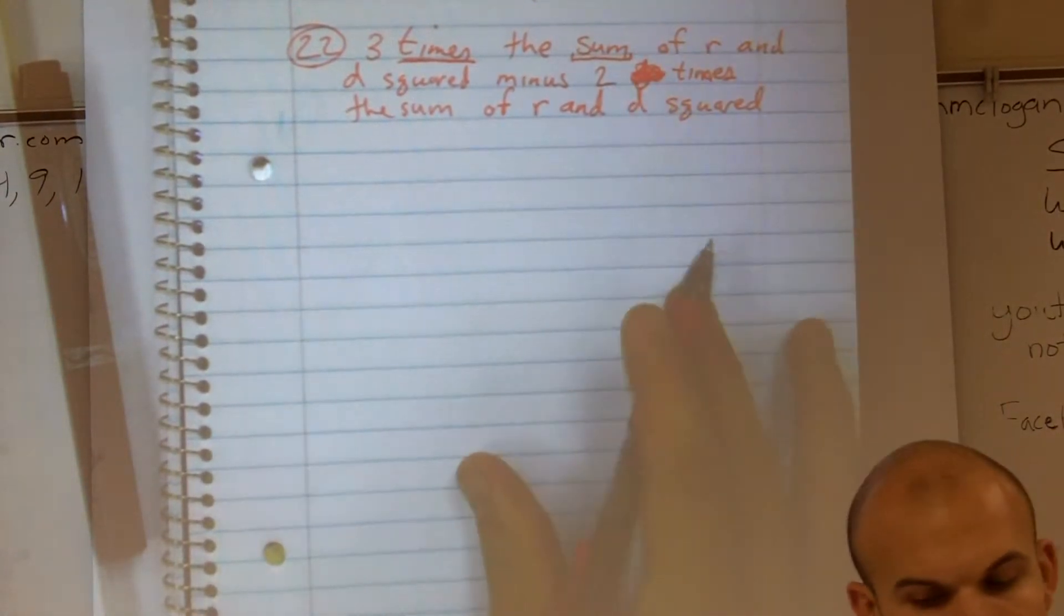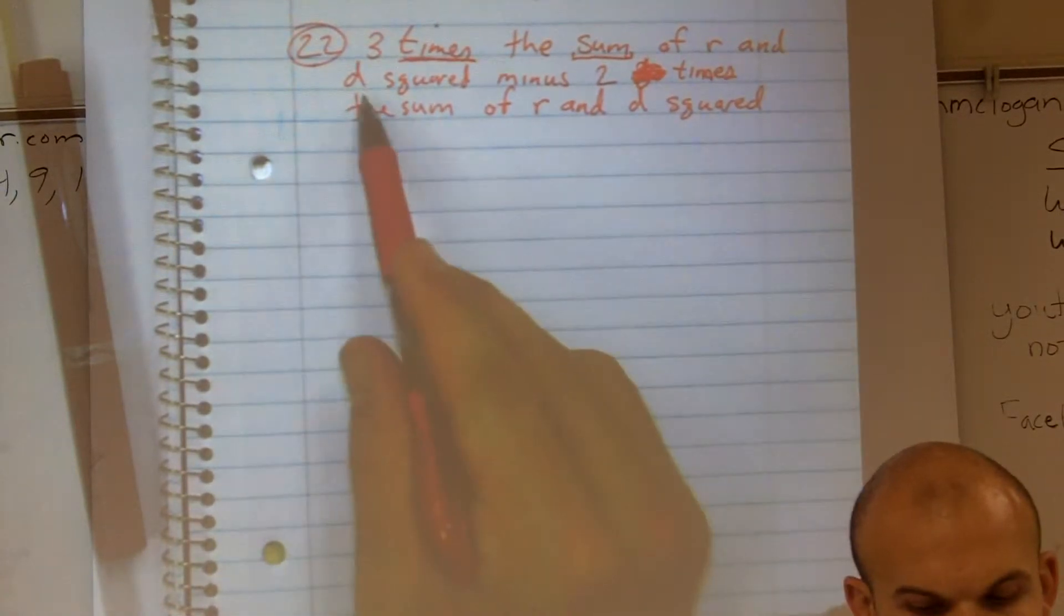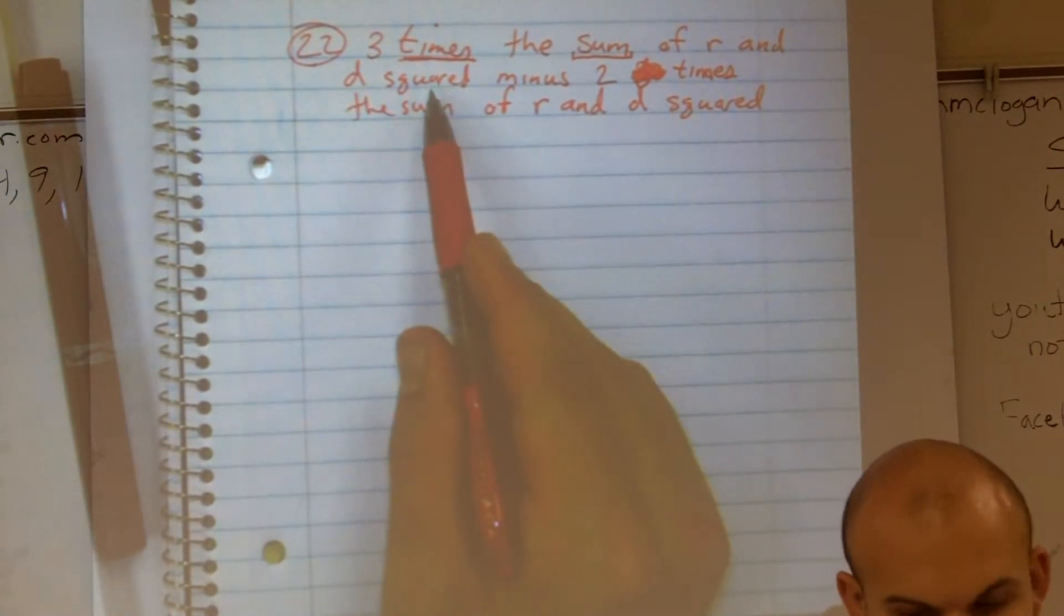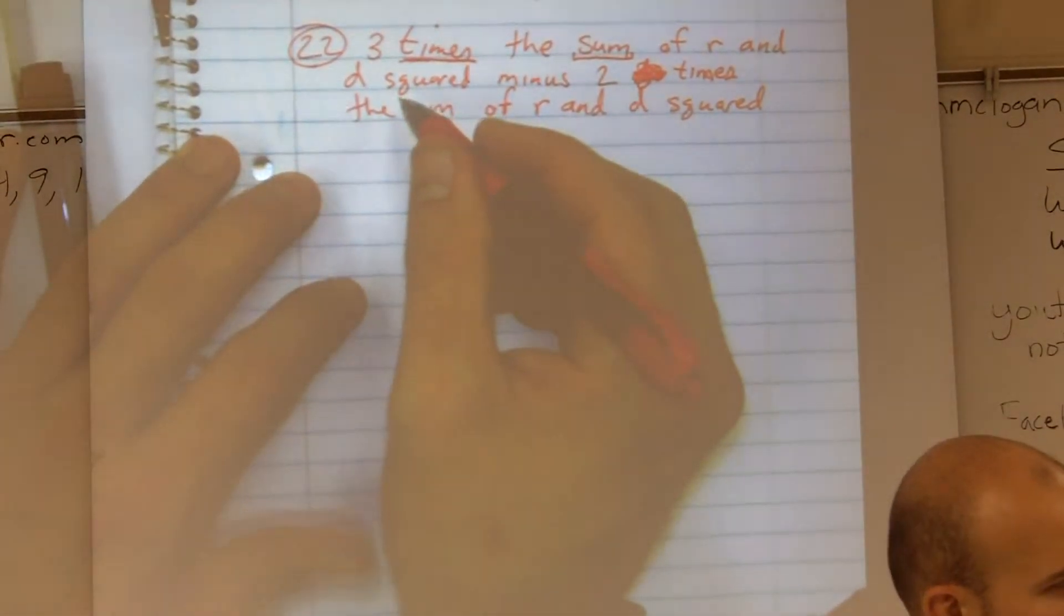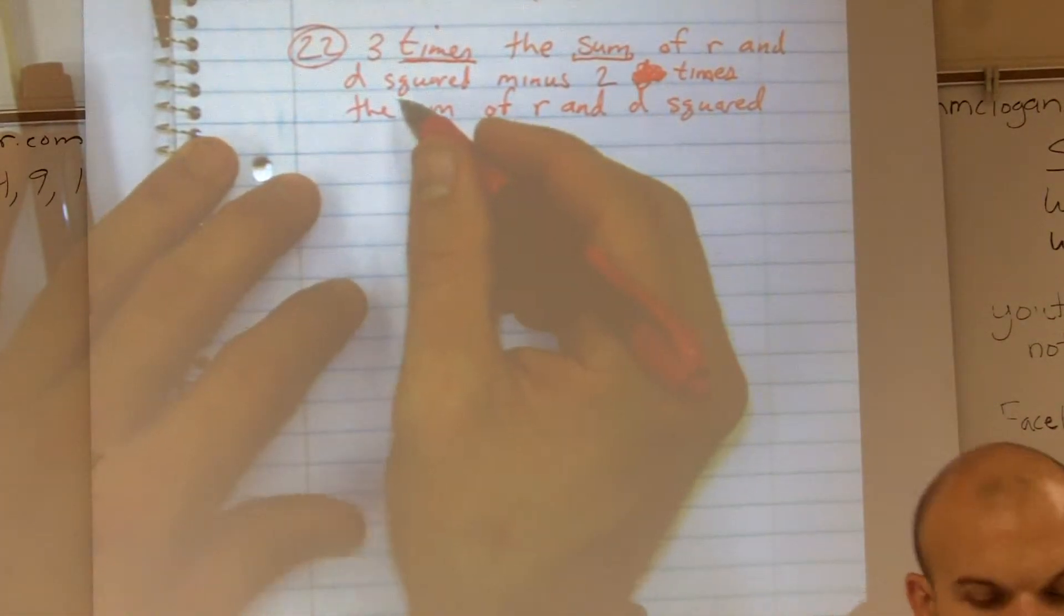So what am I going to add? Well, I'm going to add R and D, and then it says squared. So let me see this again. Squared is another thing. What does squared mean? It tells us to raise it to the second power. Very good.